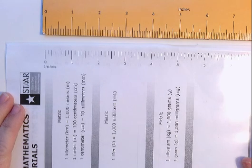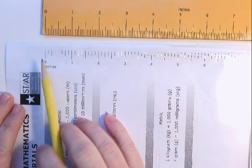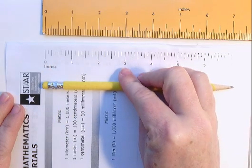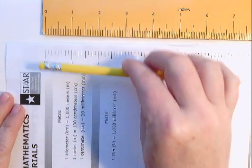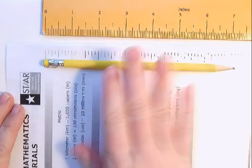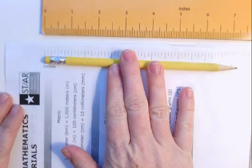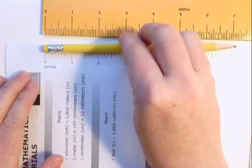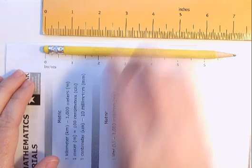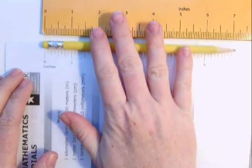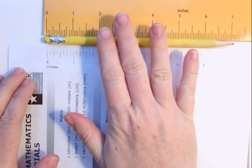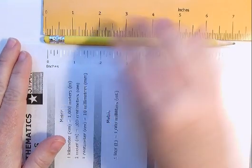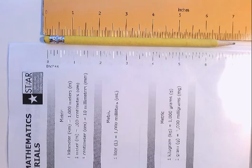When you are measuring anything of course you always start at the zero. Whether you are placing the item you were measuring on the tool or you were placing the tool on the item you were measuring you always start at zero. So we have our pencil and I'm going to get it as close as I can. And first we're going to figure out what this pencil is to the nearest whole inch.